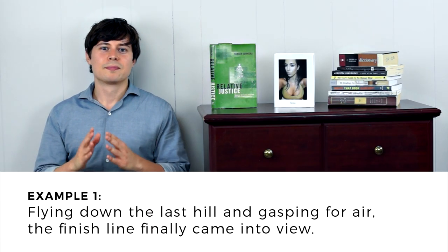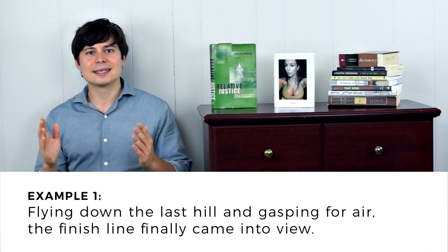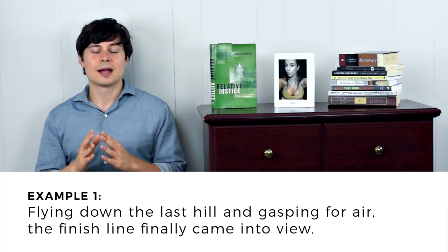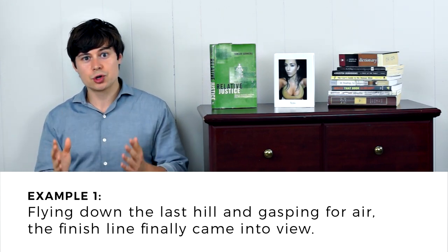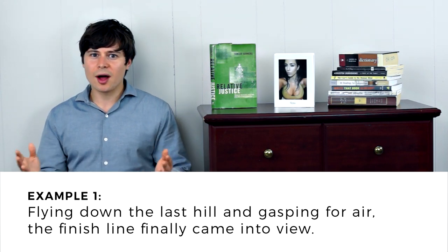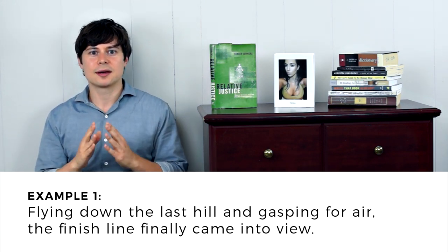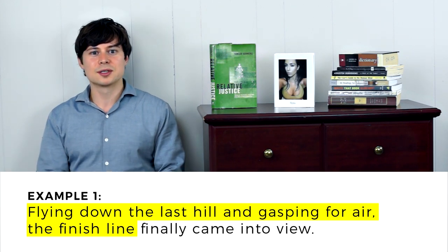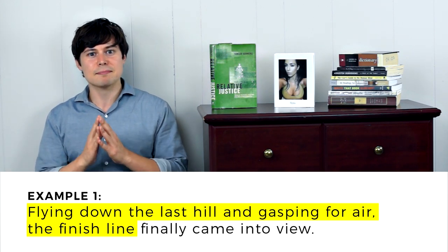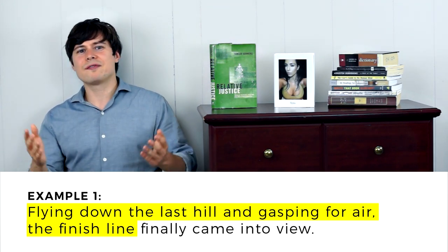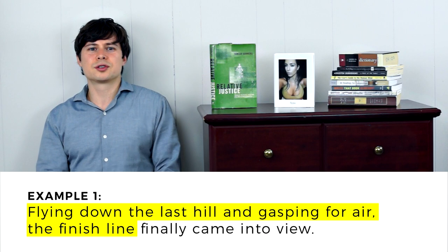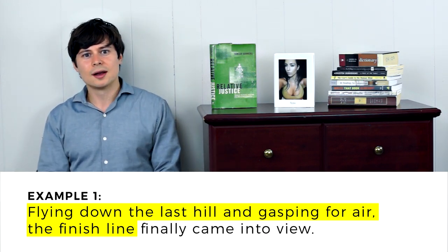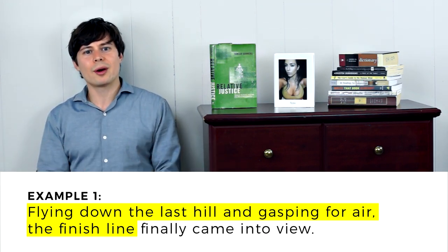The modifiers here are 'flying down the last hill' and 'gasping for air,' and the subject should be the runner. But when the author places 'the finish line' immediately after the comma, the finish line becomes the subject being modified. But we can't have finish lines just flying down hills whenever they feel like it.